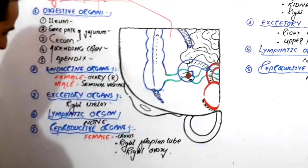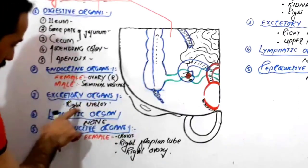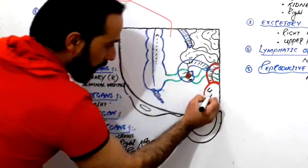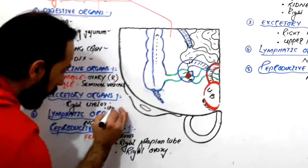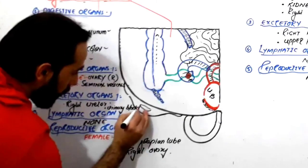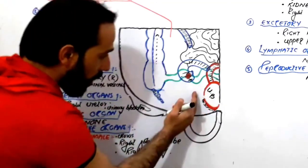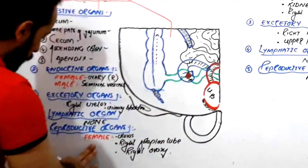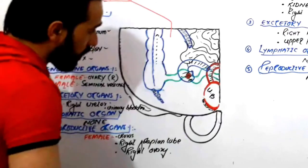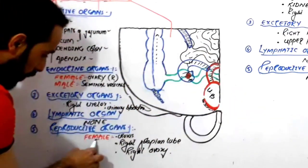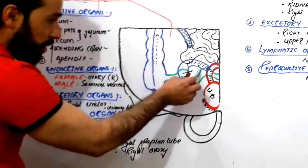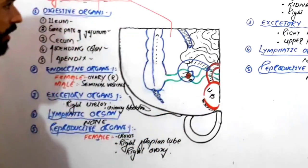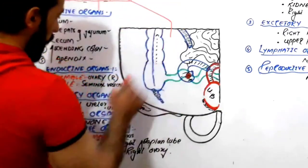One important thing I forgot to mention: the excretory organs in the right lower quadrant include the ureters and also the urinary bladder. The urinary bladder is present partly in the right lower quadrant and partly in the left lower quadrant. In the case of females, the reproductive organs in the right lower quadrant are the uterus, the right fallopian tube, and the right ovary.